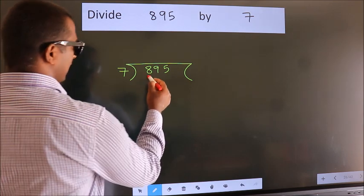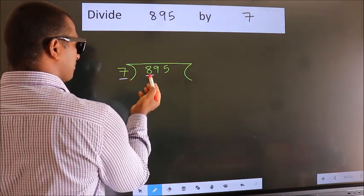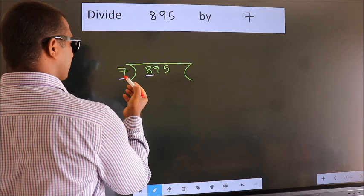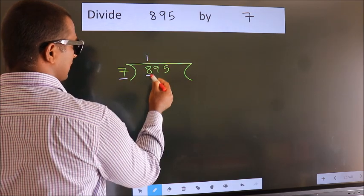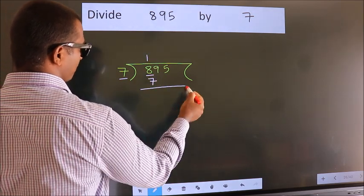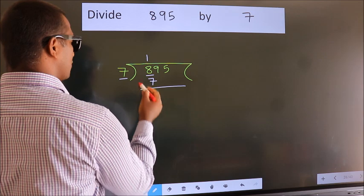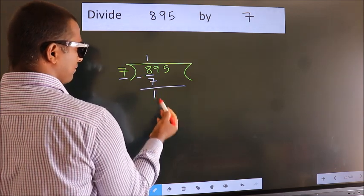Here we have 8, here 7. A number close to 8 in 7 table is 7 once 7. Now we should subtract. We get 1.